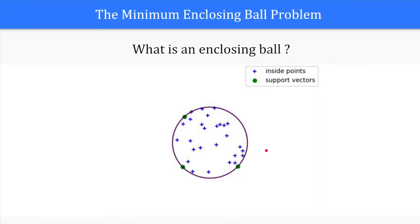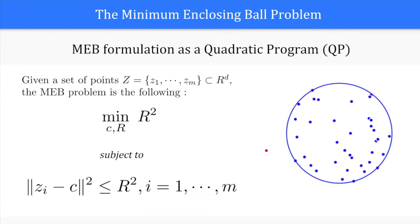The minimum enclosing ball problem can be formulated as a convex optimization problem and solved using a QP solver. With this formulation we try to minimize the radius under the constraint that all points lie inside the enclosing ball. We call support vectors the points where the constraints are active, that lie at the surface of the ball.